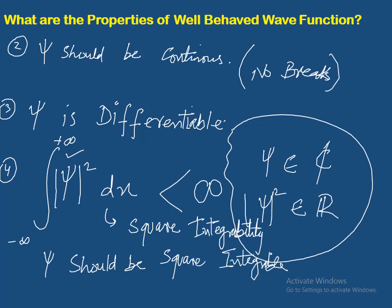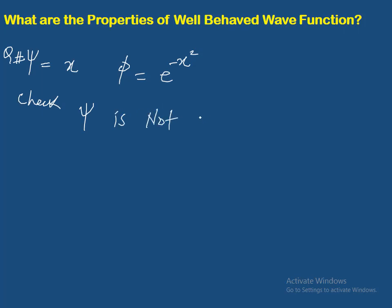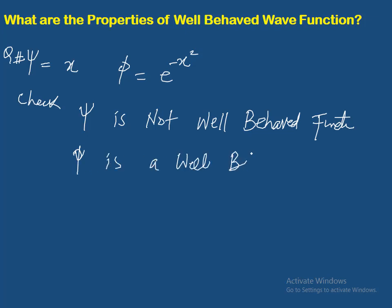Isi surat mein wave function well-behaved wave function hoga. Thanks for watching this video. Agli video tak ke liye thoda intezaar karein. Agli video mein problem solve karenge — hamaare paas do functions honge: psi(x) = x, aur doosra function phi = exponential minus x-squared. Humne in ko check karna hai ke psi is not a well-behaved function, and phi is a well-behaved function. Ye question agli video mein solve karenge. Up till next video, take care.